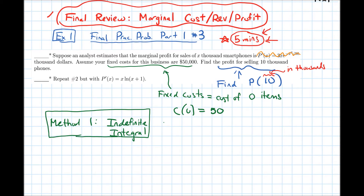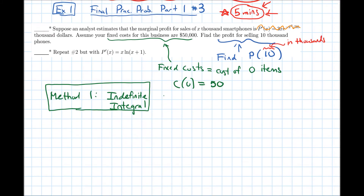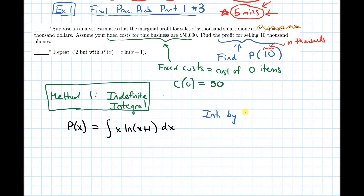With these final review questions I'm going through the solution a bit more quickly, assuming you've already tried the steps. So, the profit function P(x) comes from taking the integral of p'(x) = x·ln(x+1) dx. To take this antiderivative, one approach is integration by parts. It's also possible to start with u-substitution, but I'll use integration by parts.